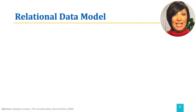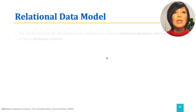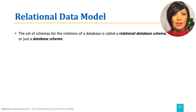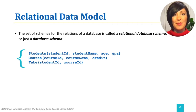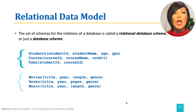The set of schemas for the relations of a database is called a relational database schema, or just a database schema. For example, a database schema for a school database may contain students, course, and take relation schemas. Or a library database schema may contain movies, books, and music relation schemas.